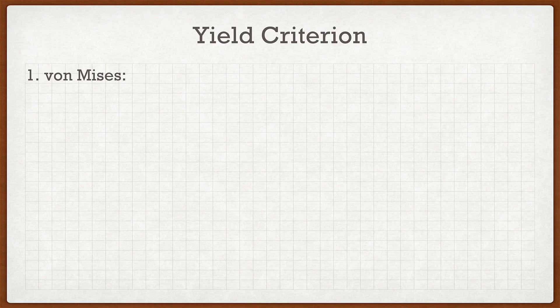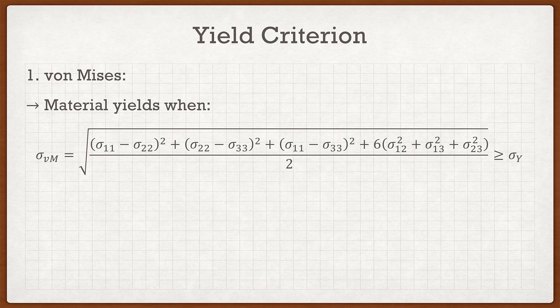Let's talk about yield criteria first — this covers parts a and b. The material yields by the von Mises criterion when the von Mises stress, given by this formula, is greater than or equal to the yield strength. The von Mises stress is just a function of the Cauchy stress matrix, which we're given, so we can calculate it with no problem. On the other side we have sigma_y, the yield stress, which is given as 496 MPa. We have everything we need — calculate the von Mises stress and compare it to the yield stress; if it's greater than or equal, the plate is yielding.